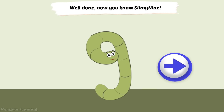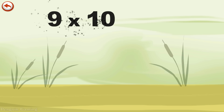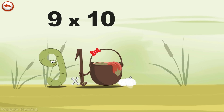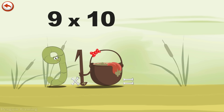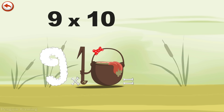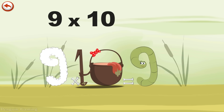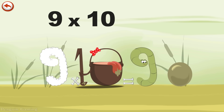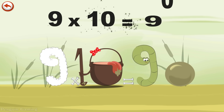Well done. Now you know Slimy Nine. What's the story of 9 times 10? When Slimy Nine meets the potion Magi Ten, it makes him very, very hungry. He dives head first into the cauldron and comes out feeling very full. He gives an enormous magic burp and blows a bubble in the shape of a 0. 9 times 10 is 90.